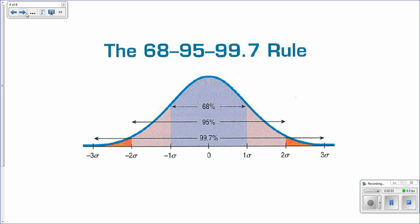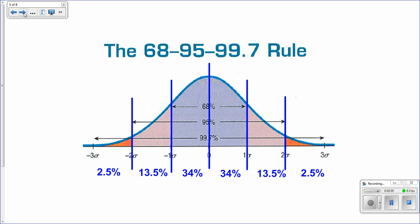And related to that, we can use that to kind of expand upon that and talk about that, within one, between zero and one standard deviation above the mean, there's 34% of our data. Or less than negative two standard deviations below is only 2.5% of our data. So you can subdivide this as well.